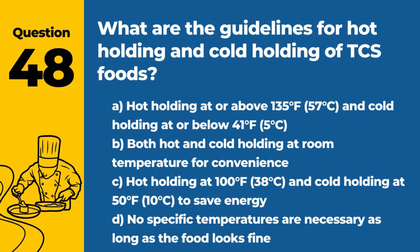Question 48. What are the guidelines for hot holding and cold holding of TCS foods? The answer is A: Hot holding at or above 135°F (57°C) and cold holding at or below 41°F (5°C). Proper temperature control is essential to prevent bacterial growth in TCS foods.